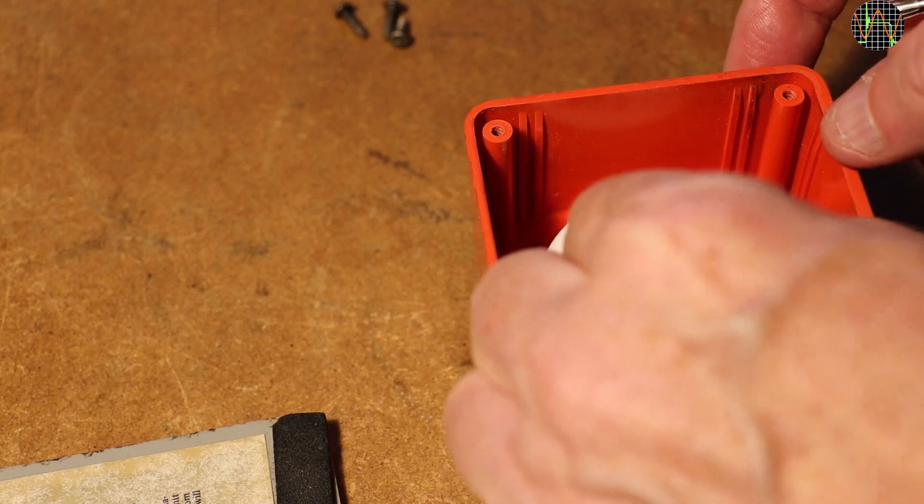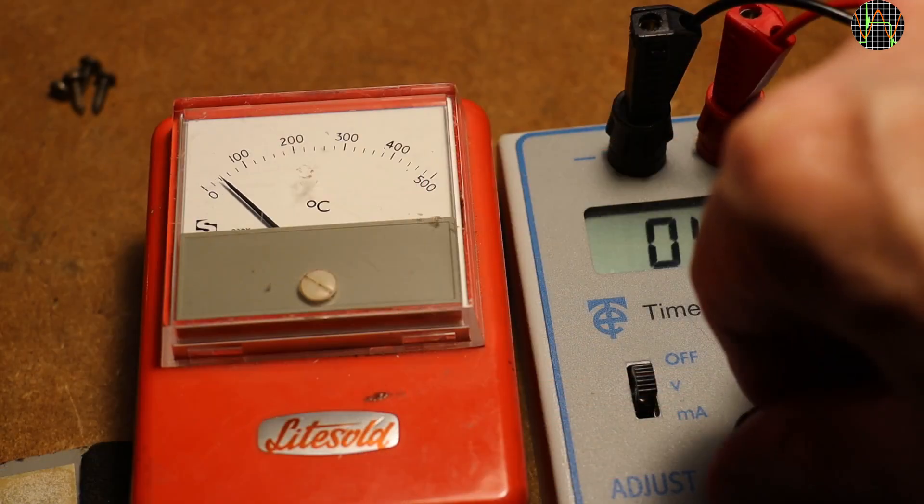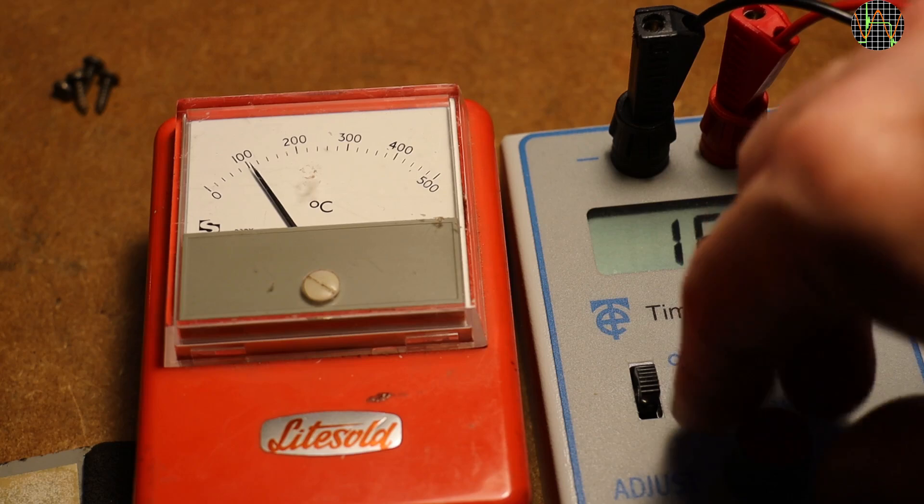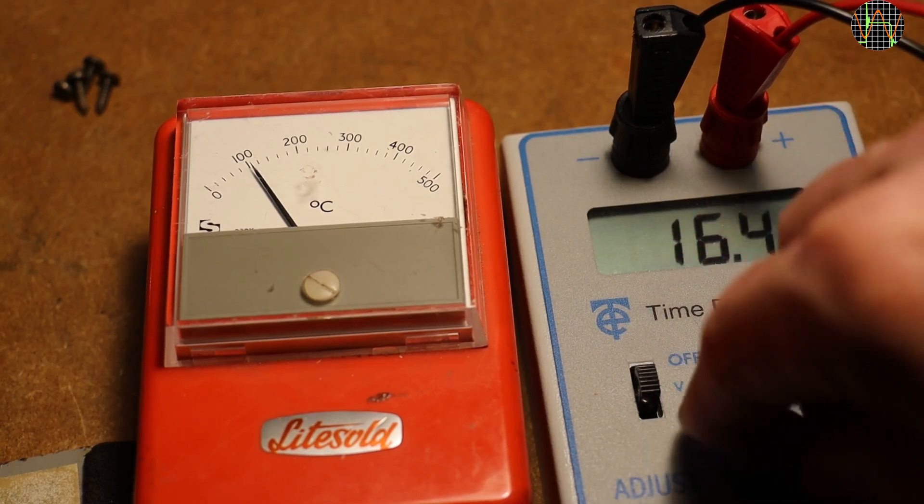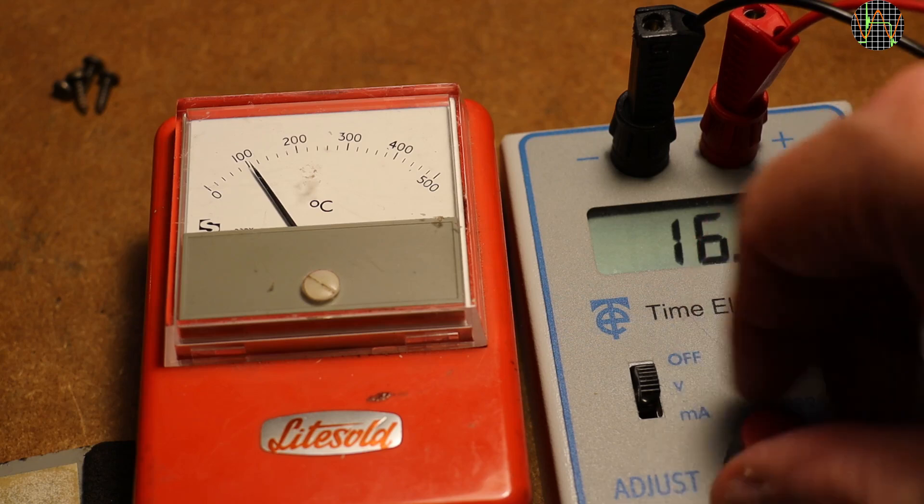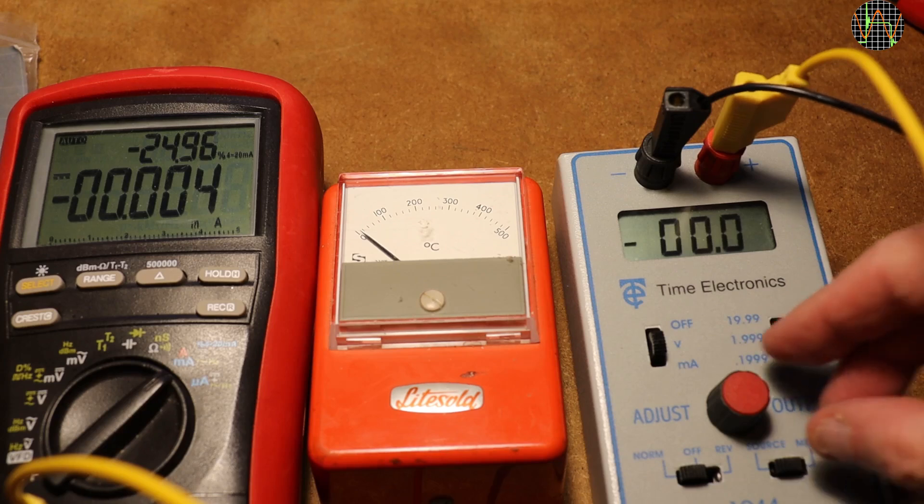Moving on, let's test the instrument by applying some test leads to it. I am using my calibrator in voltage mode, but something is wrong. The needle does not go over 100 and the calibrator is stuck at 16.4 mV. This is strange, obviously the instrument is drawing too much current for the calibrator to handle.